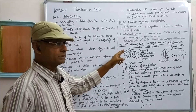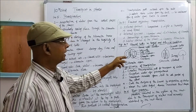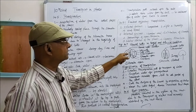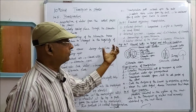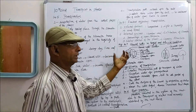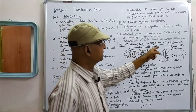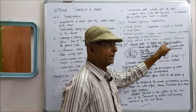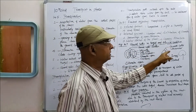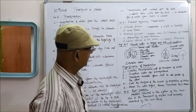When the guard cells are in full turgid condition, then only the stomata will open. When the guard cells are in flaccid condition, the stomata will be closed.